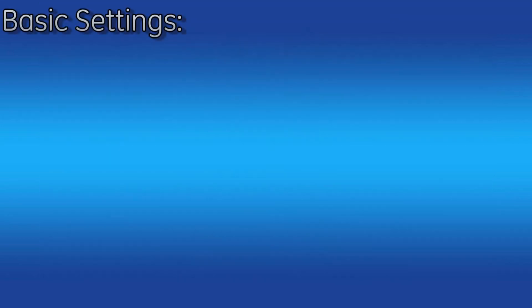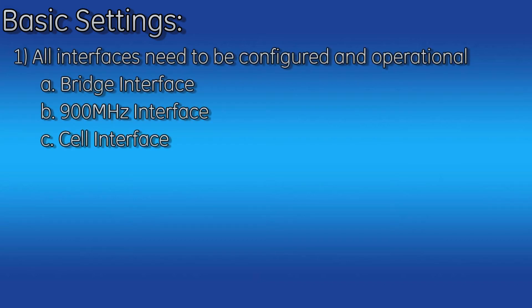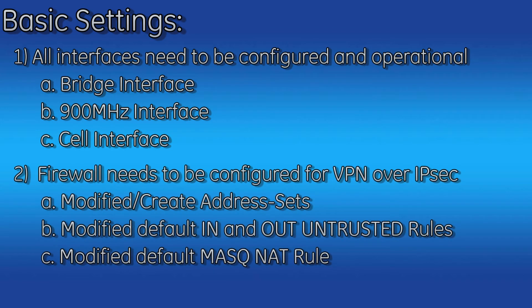Now we will cover the basic settings that are required within the Orbit MCR. All interfaces need to be configured and operational. This includes the bridge interface, the 900 MHz interface, and the cell interface. The firewall needs to be configured for VPN over IPSec. This includes modifying and creating address sets, modifying the default in and out untrusted rules, and modifying the default innat rule.